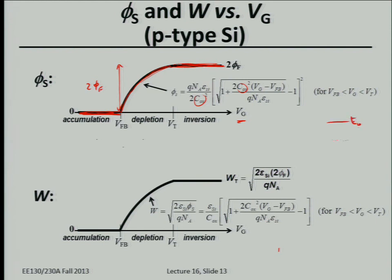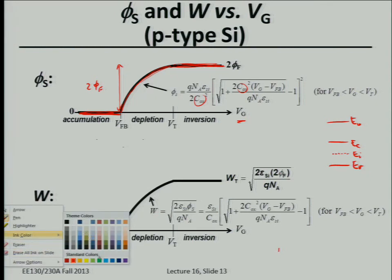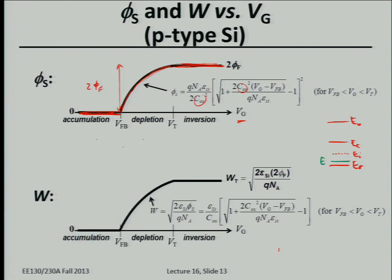φF is defined as the separation between the intrinsic Fermi level (near mid-gap) and the Fermi level in the p-type silicon (in the lower half of the band gap). The larger φF is, the more p-type your substrate — it takes more gate voltage and more band bending to change the surface from p-type to n-type. For a more heavily doped p-type substrate, you need more voltage applied to change the surface to n-type.